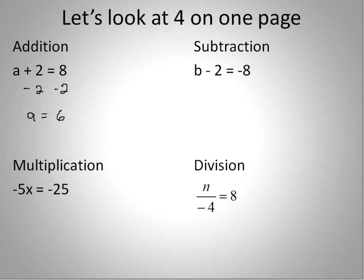For subtraction, we would add. So if it's b minus 2, we would add. Do the opposite. b is equal to negative 8 plus 2 will give us negative 6.